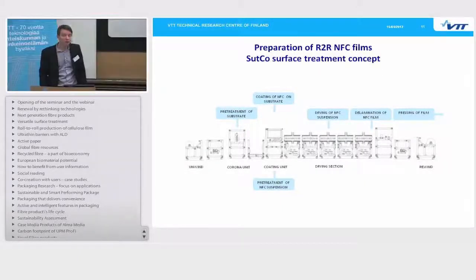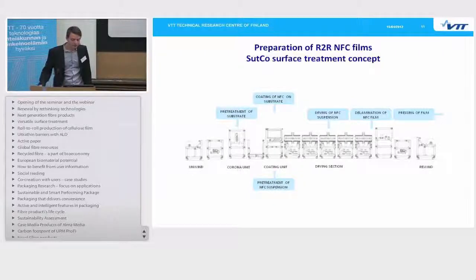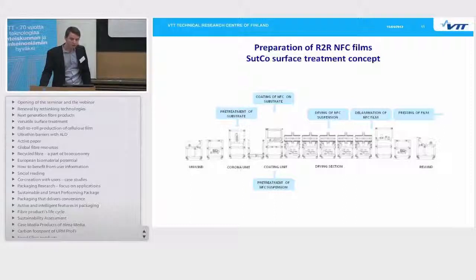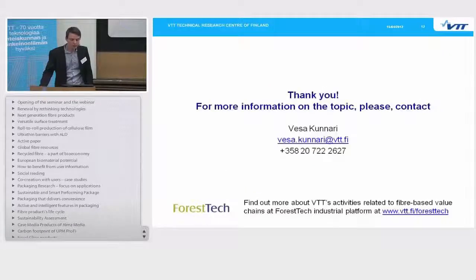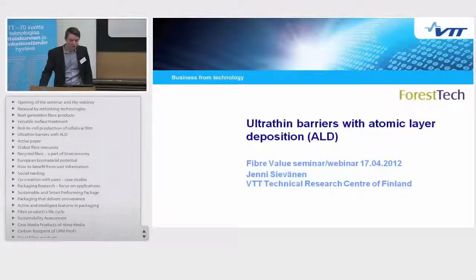Here you can see a schematic presentation of our surface treatment concept and how these nanocellulose films are made. Starting from the left: first we pretreat our plastic substrate using corona or plasma treatment to adjust its properties for the nanocellulose. We then coat the NFC film onto the plastic substrate, and we may need some pretreatment of the NFC — perhaps adding a softener or gentle warming to ease evaporation during drying. After coating, we dry it, then delaminate it from the plastic film. The plastic film can be reused and recycled. Finally, we press the film to make it more dense and even, finishing it into a good product. Thank you.